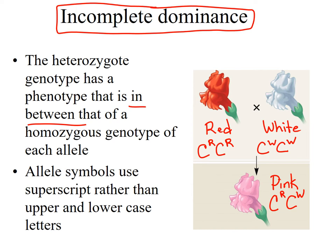Let me key out our allele symbols: C superscript R is red and C superscript W is white. Note there is no allele that results in pink — it is only this incomplete dominant interaction in the heterozygote.